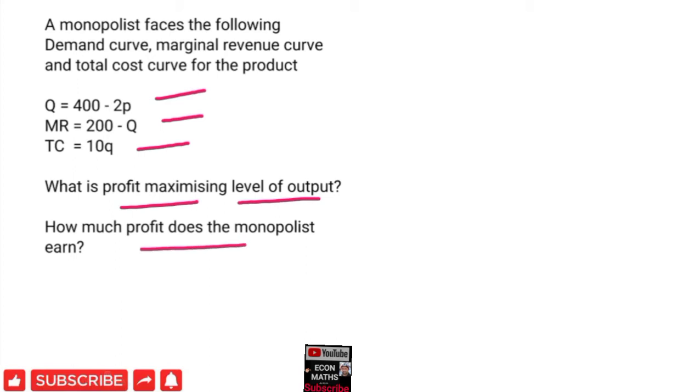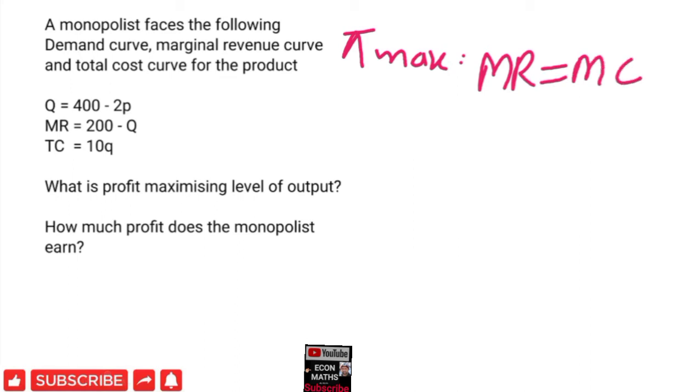We will see how to solve this. The profit maximization condition is: profits are maximized at a point where marginal revenue equals marginal cost. Marginal revenue is given as 200 - Q.